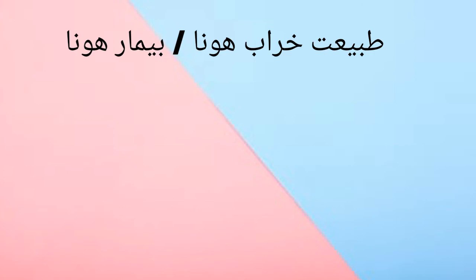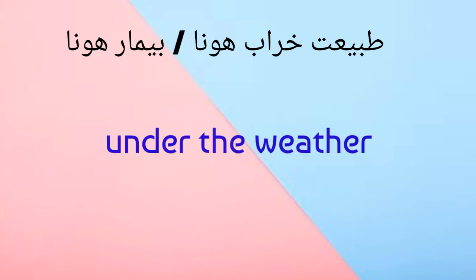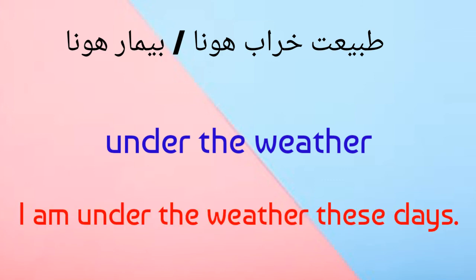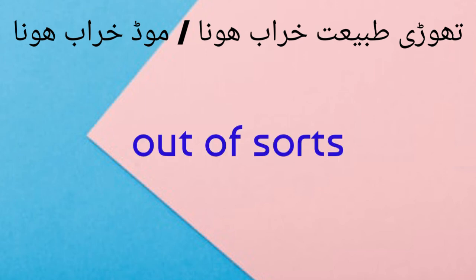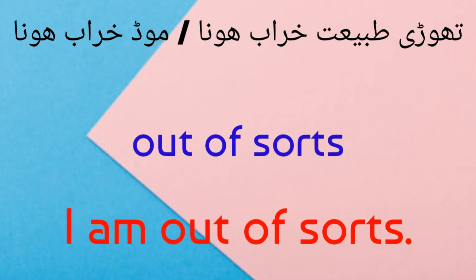طبیعت خراب ہونا، بیمار ہونا — under the weather. I am under the weather these days — آج کل میری طبیعت خراب ہے. For a slightly bad mood or feeling unwell: out of sorts. I am out of sorts — میری طبیعت یا mood خراب ہے.